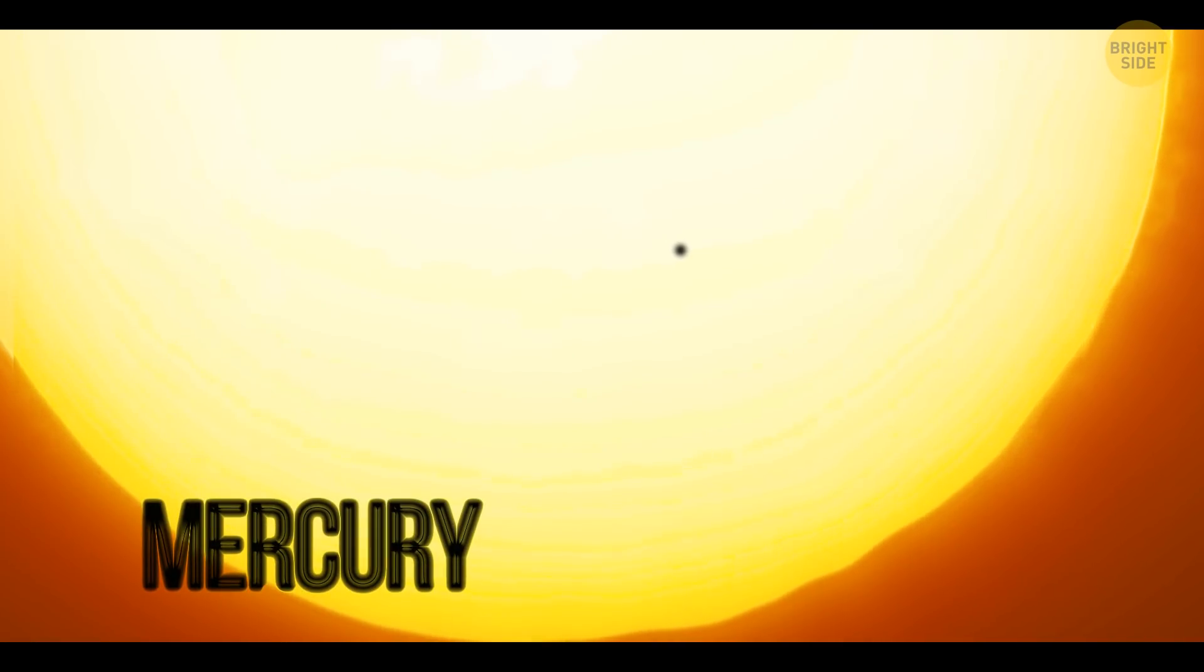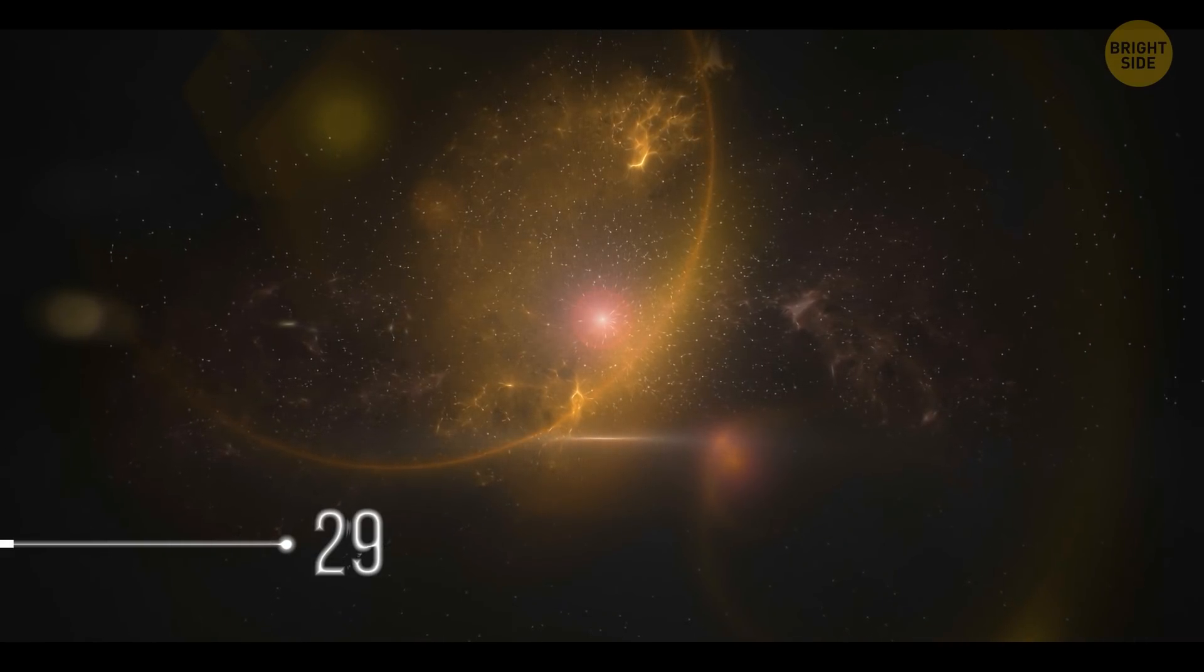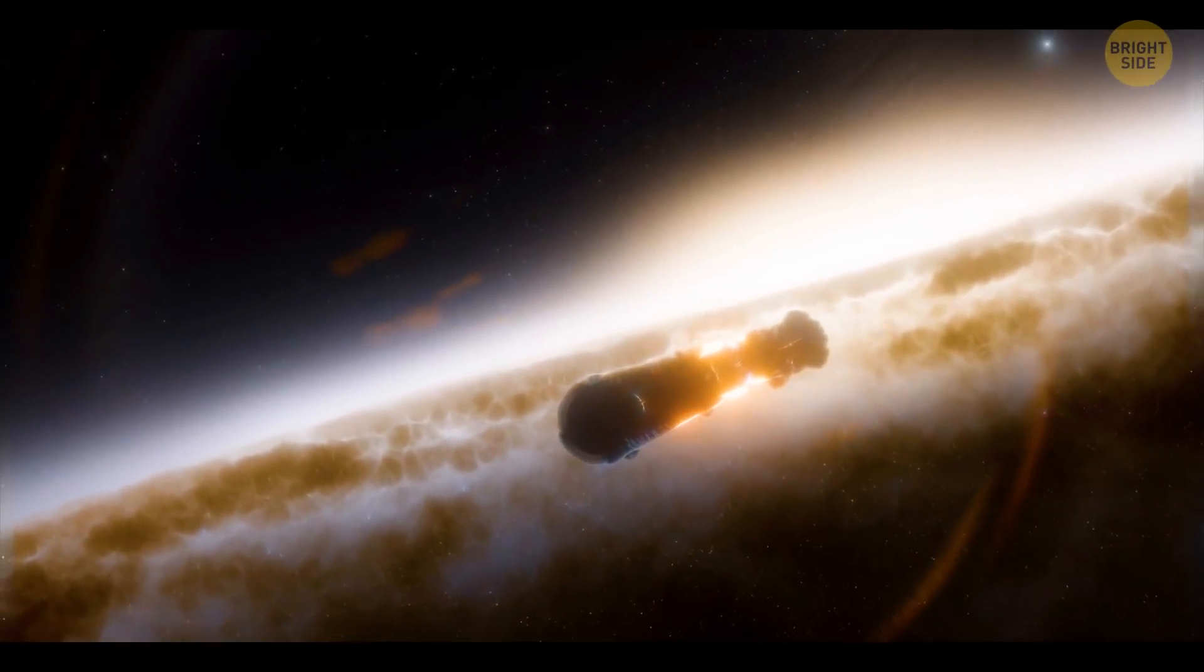Sometimes we can observe such transits of Mercury and Venus on the solar disk. And there are at least 29 potentially habitable planets out there in distant space that can observe Earth in the same way.